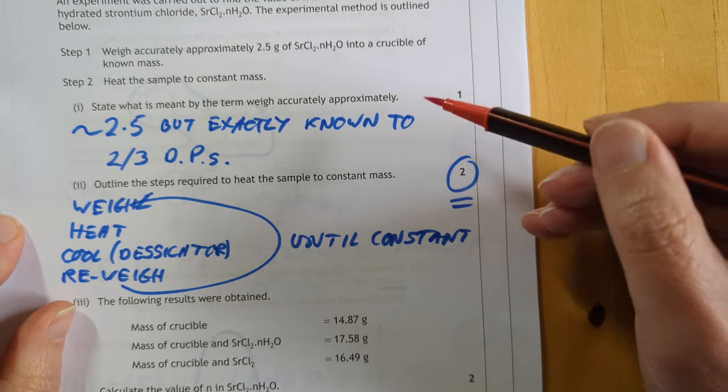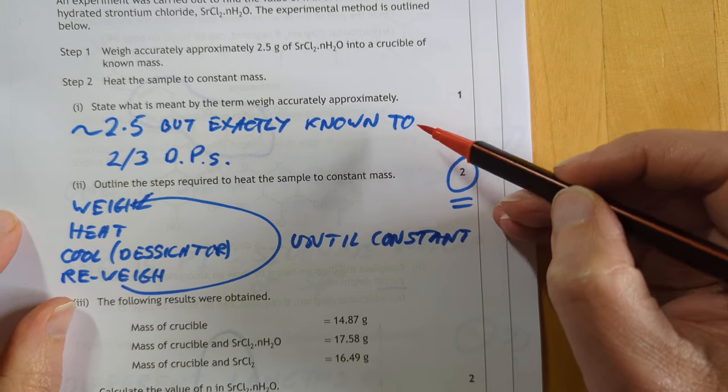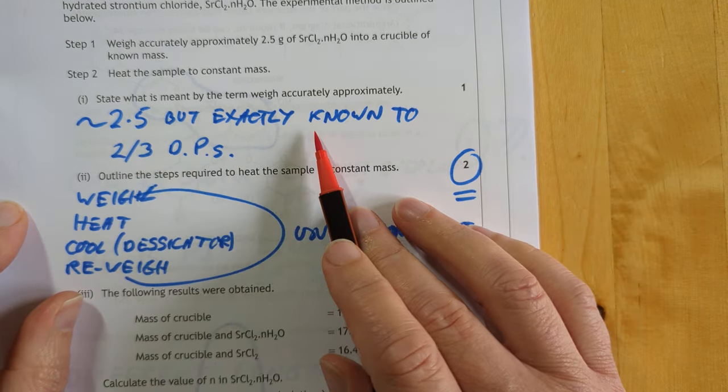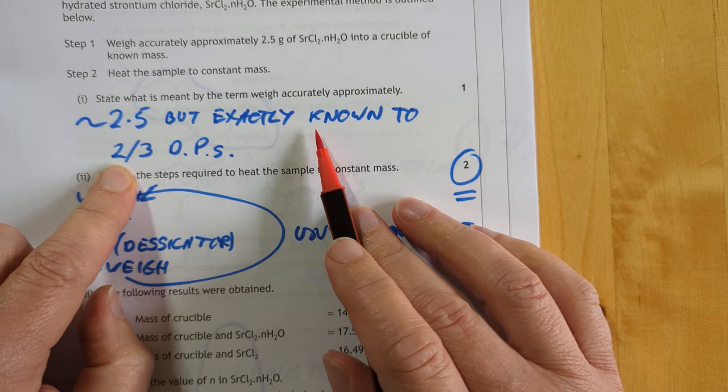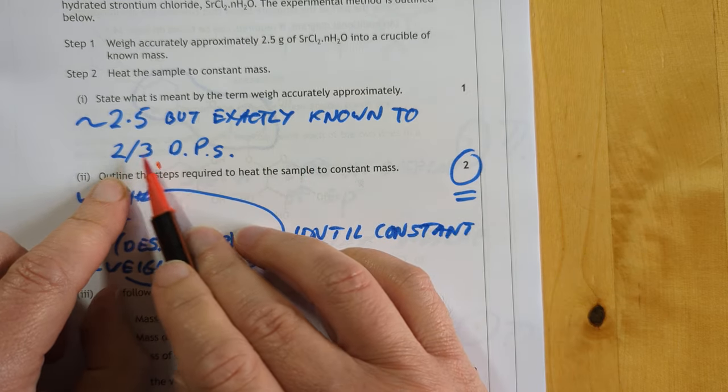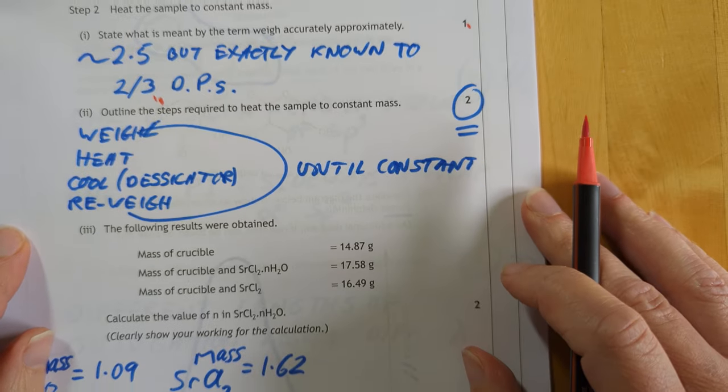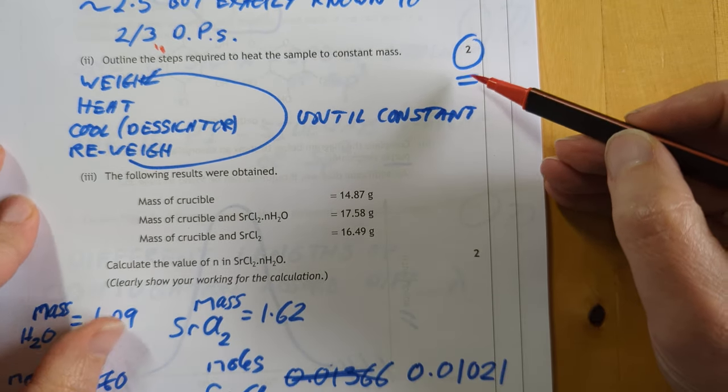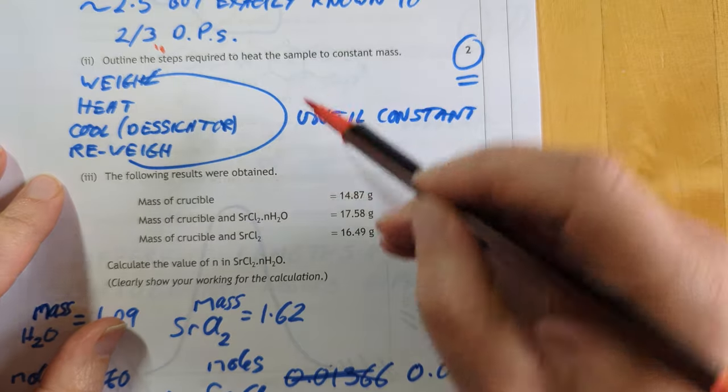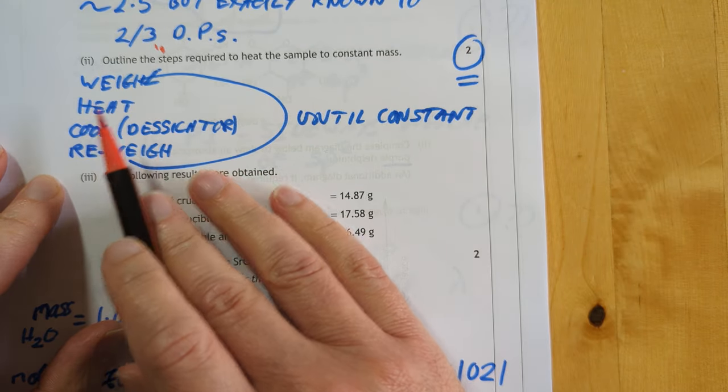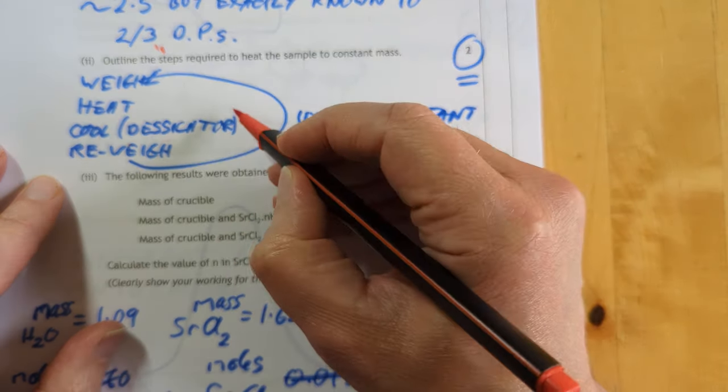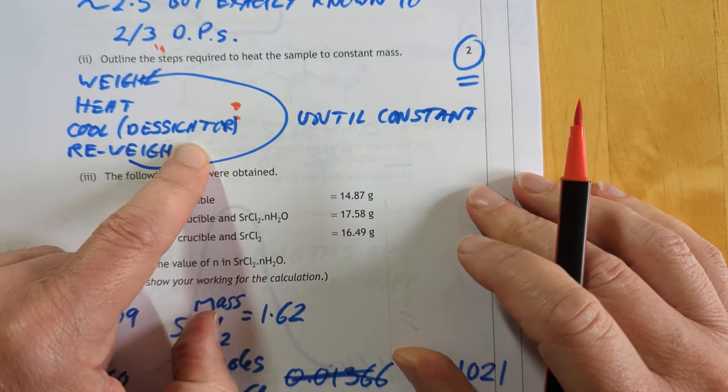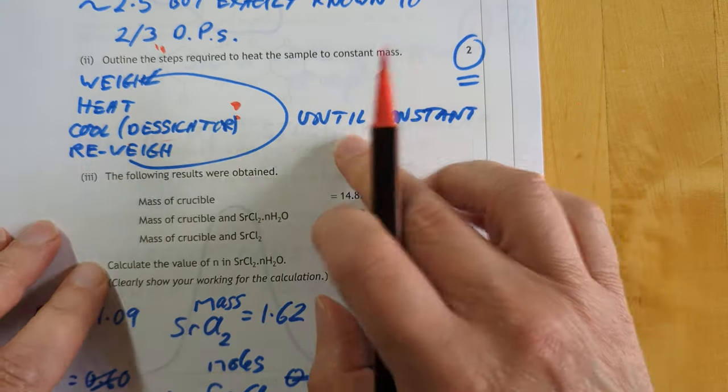State what it's meant by the term exactly, approximately, for weighing stuff. So it's around about 2.5 grams, but an exactly known mass to an accuracy of two or three decimal places. I'm not sure what the SQA you want on that. It'll be interesting to see when the official answers come out. Why did I circle this? Oh, because I have no clue how they're going to allocate this I'm afraid. So you would weigh your sample, you would heat it, you would cool it in a desiccator. Is that required? I do not know. It's required in real life. Then you re-weigh and then you just keep going until you reach a constant weight.